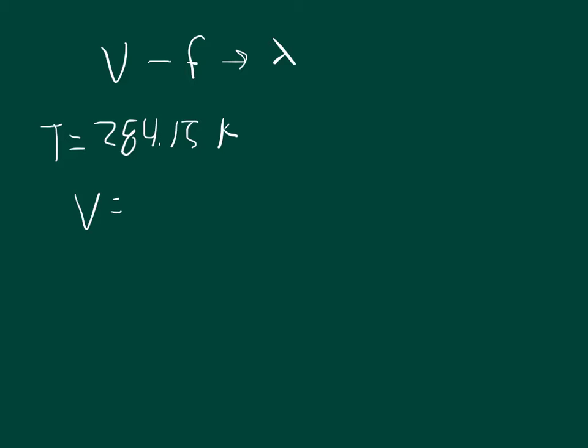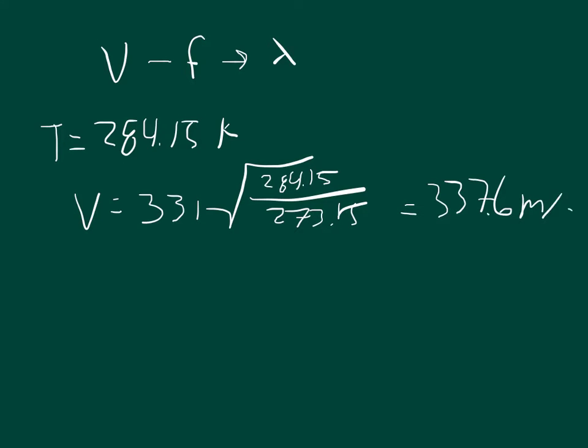And so we can plug that into the equation that the velocity is equal to 331 times the square root of T over 273. So T is 284.15 and divide that by 273.15. So the velocity is equal to 337.6 meters per second. Now keep that number in mind, we're going to come back to it.